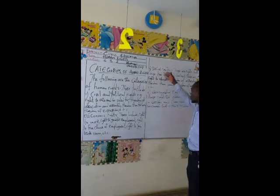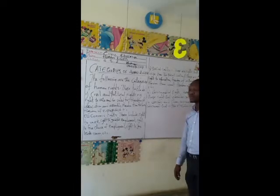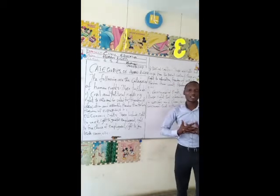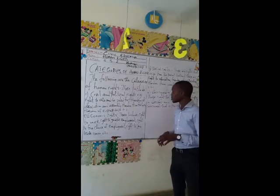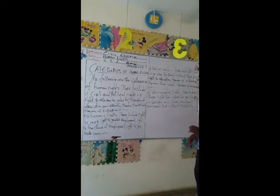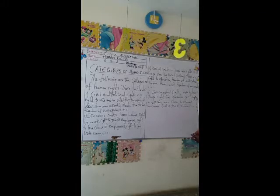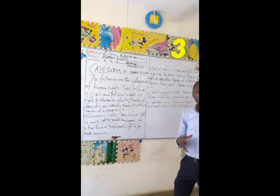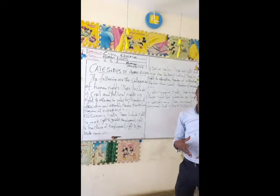Looking at the board, you can see the following are the categories of human rights. These include: one, civil and political rights — meaning there are some rights that are categorized as civil and political rights. These are rights that take care of our political interest. Under the constitution you have rights like the right to vote and be voted for, freedom of association, freedom to form assembly or to join any association of your choice, freedom from torture, freedom of expression, and so on. All these rights are focused on the civil and political development of the citizen.